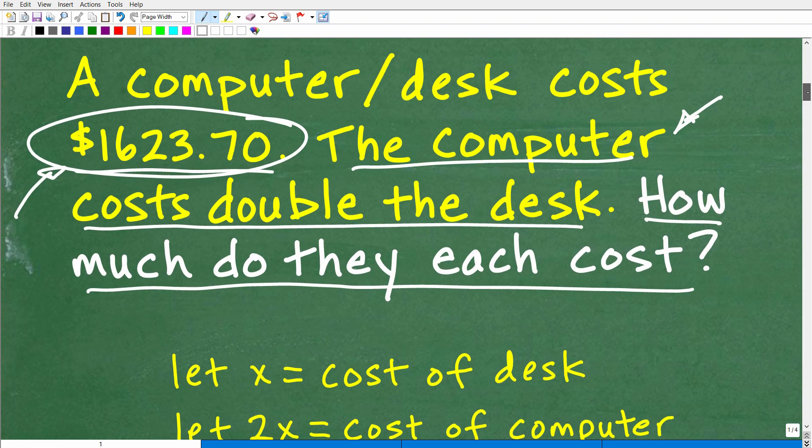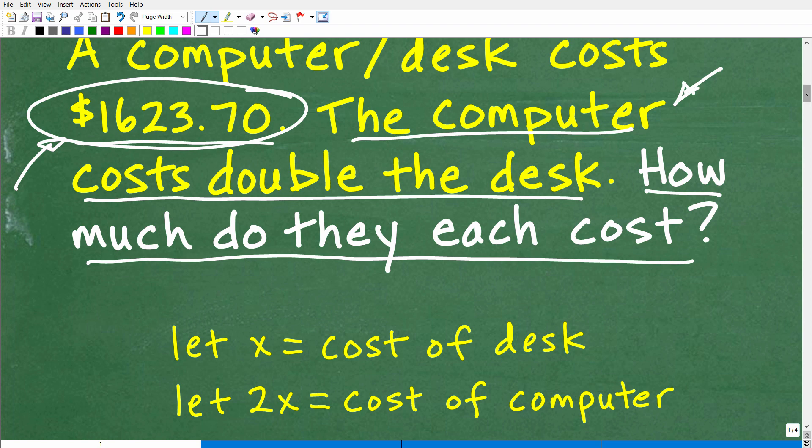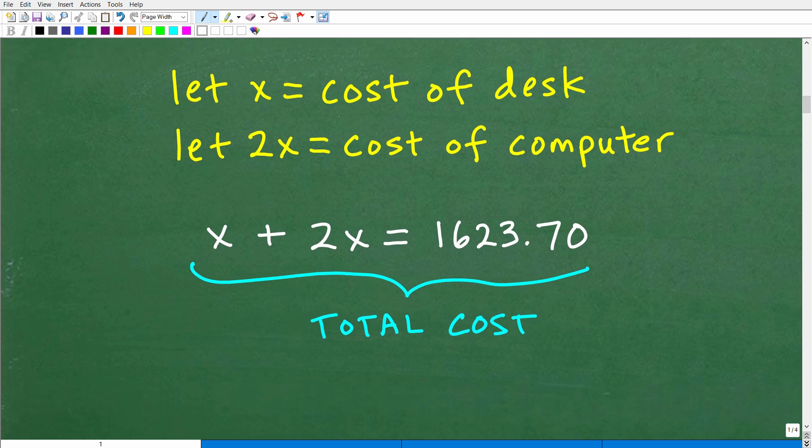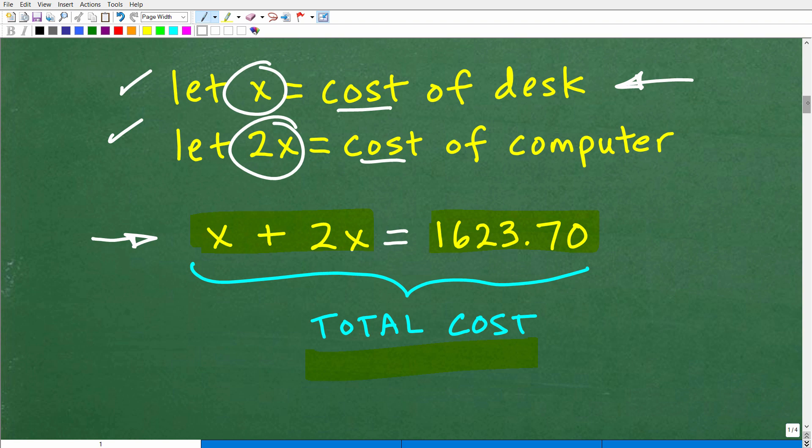All right, so we also know that the total cost is $1,623.70. So that means that here, I could be like, this cost plus this cost, because this is what these represent, x plus 2x, which I have right here, this is the total cost of these computers. And we know that the total cost is this amount right here. So after you establish, assign some variables to represent something in your problem, the next step is you need to create an equation. You can't find out what the value of these variables are unless you can establish an equation. And this is hopefully a pretty obvious equation that we can establish. So right now, we have this nice equation. So what do we need to do? Well, we need to now solve for x. And once we get x solved for in this particular equation, that would be the answer that represents the cost of the desk.